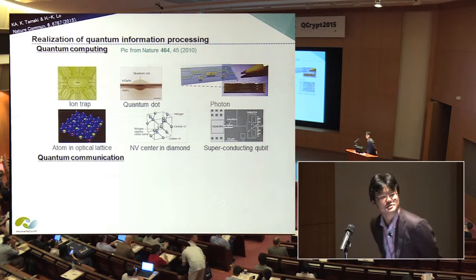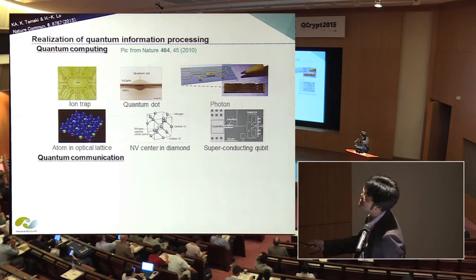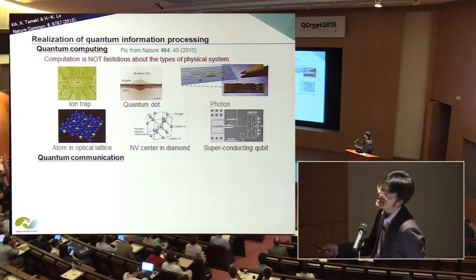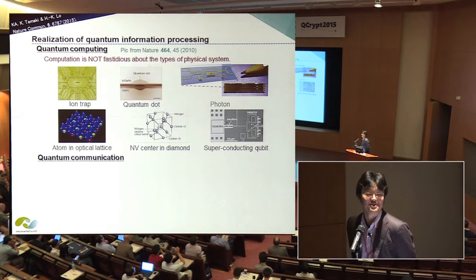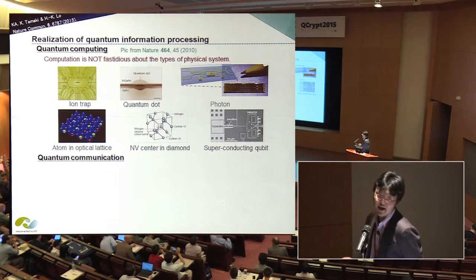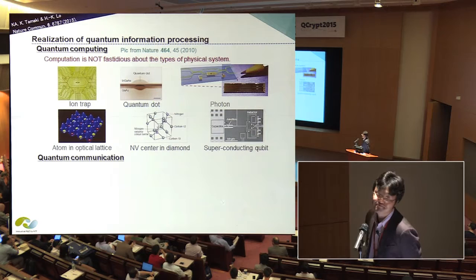If we see the realization of quantum computing, we can easily find the existence of many candidates. Somebody says that the ion trap seems to be a good candidate. Somebody says that the superconducting qubit seems to be a good candidate. I cannot say which system is better than the others. However, computation is not fastidious about the types of physical system, as long as the physical system has good controllability. This comes from the fact that quantum computation is ultimately just a local information processing. Therefore, if we have a good quantum system, such a system can be regarded as a good candidate.